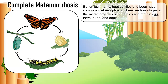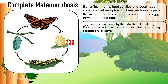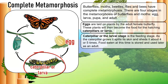There are four stages in the metamorphosis of butterflies and moths: egg, larva, pupa, and adult. Eggs are laid on plants by the adult female butterfly. These plants will then become the food for the hatching caterpillars or larva. The caterpillar, or larval stage, is the feeding stage. As the caterpillar grows, it splits its skin and sheds it about four or five times.